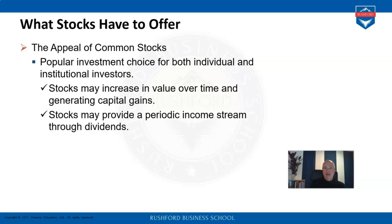The other income is the regular income in the form of dividends. Dividends are regular payments out of the profit from the company, and that is what gets paid to the shareholders.